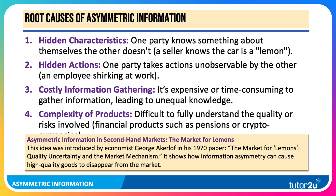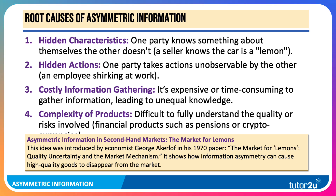The famous example of this is the market for lemons. This idea was introduced by economist George Akerlof, a Nobel Prize winner, in his 1970 paper 'The Market for Lemons: Quality Uncertainty and the Market Mechanism.' It shows how asymmetric information can cause high-quality goods to disappear from the market.